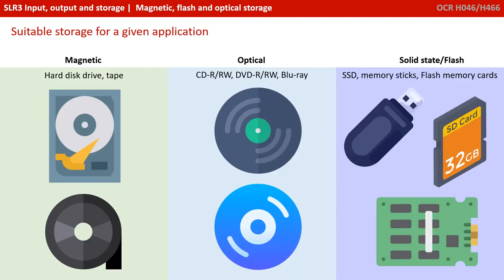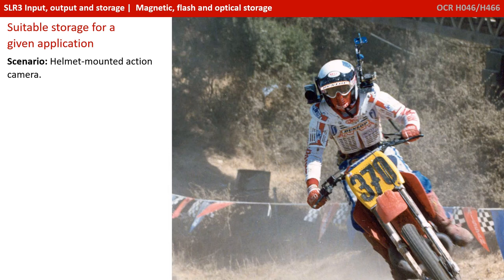As well as being able to understand and discuss various types of storage, it's important also to be able to justify what type of storage you would use for a given application, situation, or scenario. So let's have a look at a few scenarios. Here we have a helmet-mounted camera. In terms of capacity, we want to be able to store video footage. We want to be able to quickly get the data on and off the media, and it needs to be stored quickly as we'll be capturing real-time video footage. The device needs to be portable and durable, as it will potentially receive lots of knocks and bumps. It needs to be fairly reliable, but we appreciate that over time we'll need to replace it. Given all the options, the best fit here would be a solid-state drive.